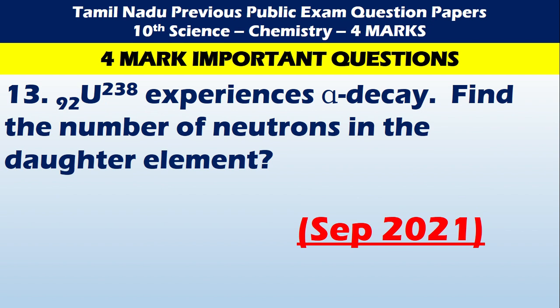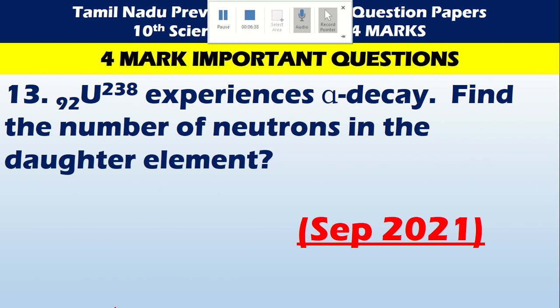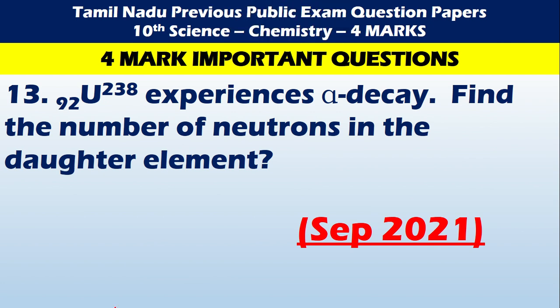The thirteenth question is: Uranium-238 (92U) experiences alpha decay. Find the number of neutrons in the daughter element.